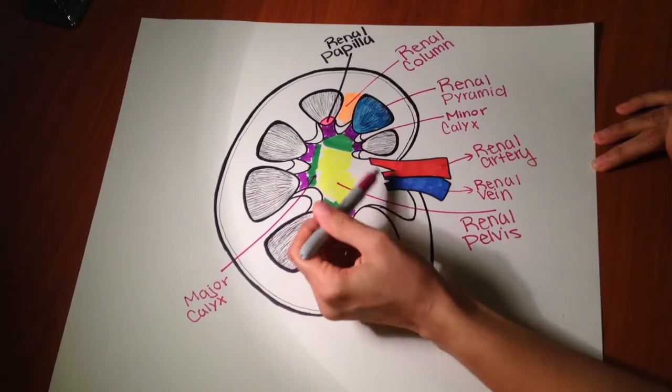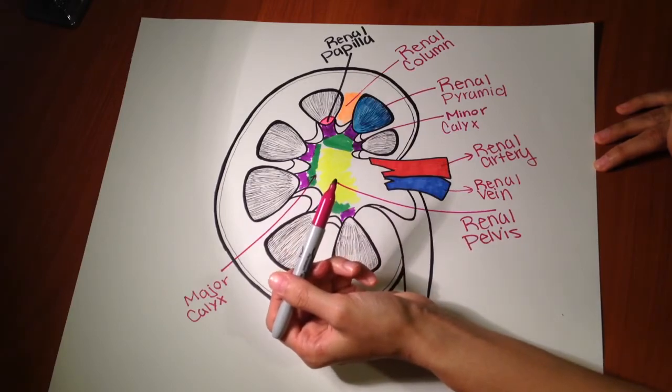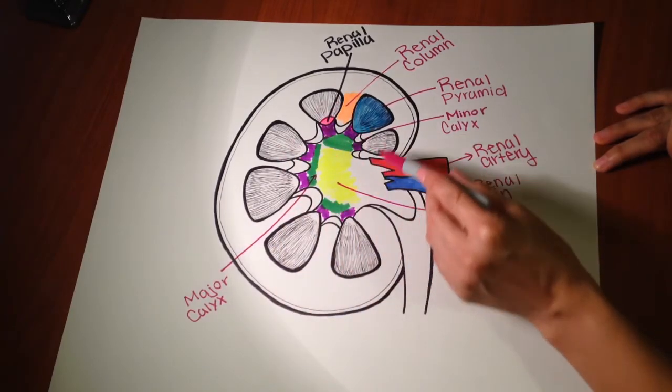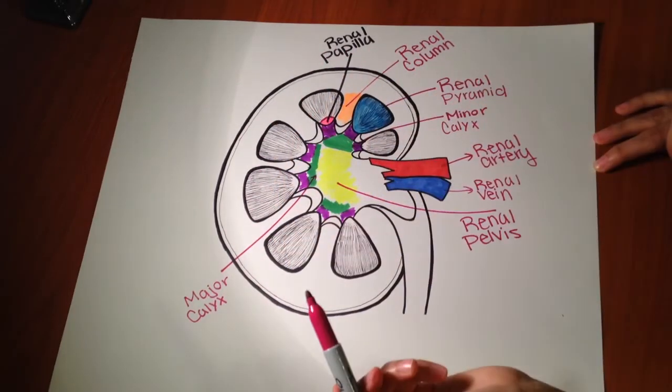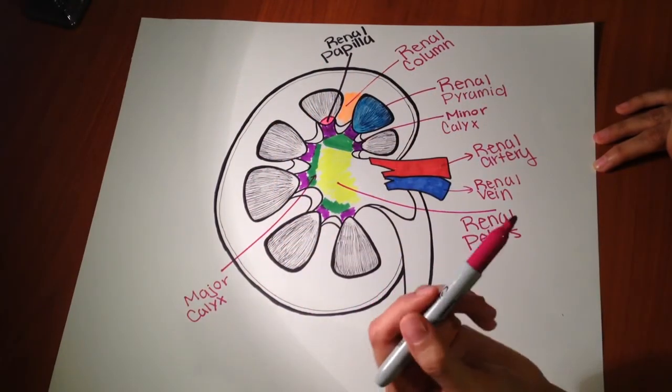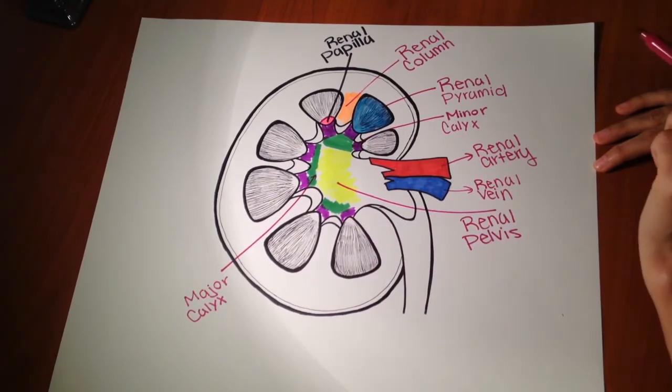Now I kind of stopped drawing them at this area, but as you know, they continue to branch out all throughout the kidney. There is a video I have where I explain naming them, but I am not going to go over those in this video.